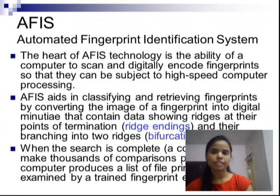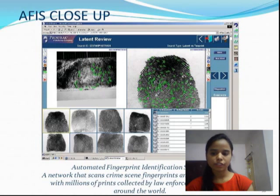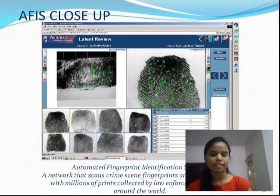The heart of AFIS technology is the ability of a computer to scan and digitally encode fingerprints so that they can be subject to high-speed computer processing. There are two types of fingerprint identifications: 10-print identification and latent print identification. 10-print identification is used to confirm the identity and criminal history of an arrest. Latent print identification uses the latent print from a crime scene to identify a suspect.